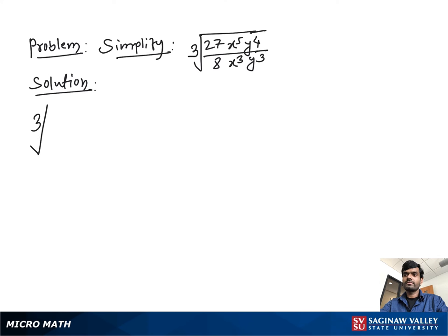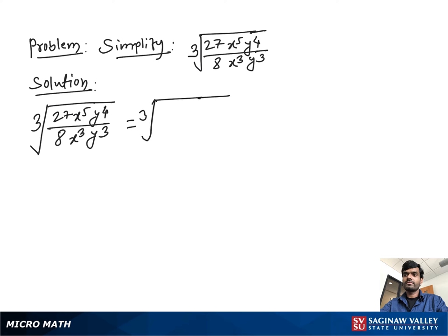Simplify cube root of 27x⁵y⁴ divided by 8x³y³. First, we solve inside the radical, then deal with the cube root. We can write cube root of 27 over 8, times x⁵ divided by x³ is x², times y⁴ divided by y³ is y.